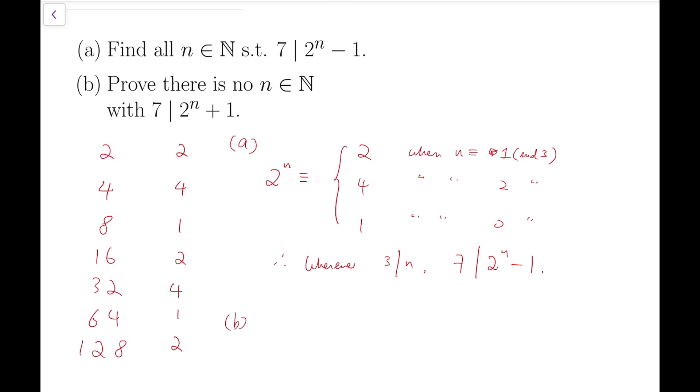So for the second part, from the results above, we know the remainder when 2^n + 1 is divided by 7